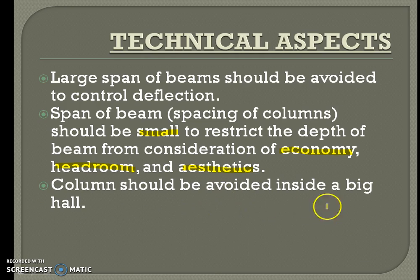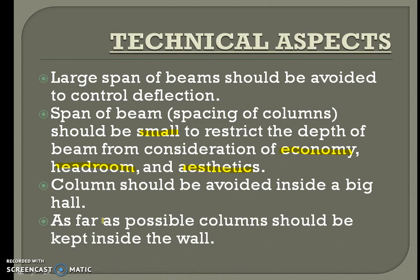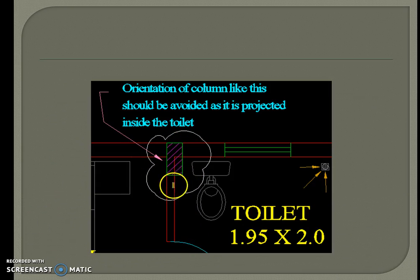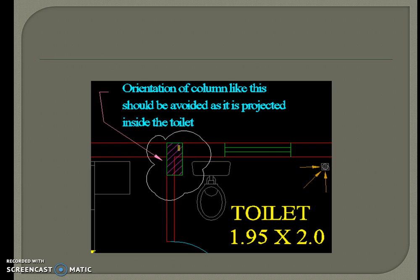Columns should be avoided inside a big hall so that the floor area is not affected. As far as possible, columns should be kept inside a wall and should not be projecting outside a wall. If the orientation is done in the wrong way, as shown here, it will affect the floor space and the appearance will not be good. Therefore, columns should be oriented such that they do not project outside the wall, and proper stability of columns must be maintained.